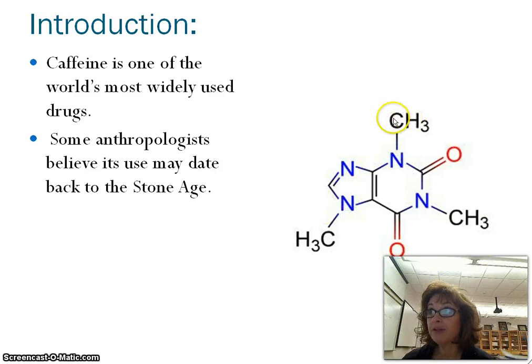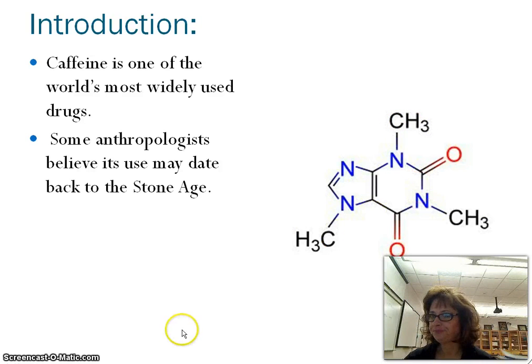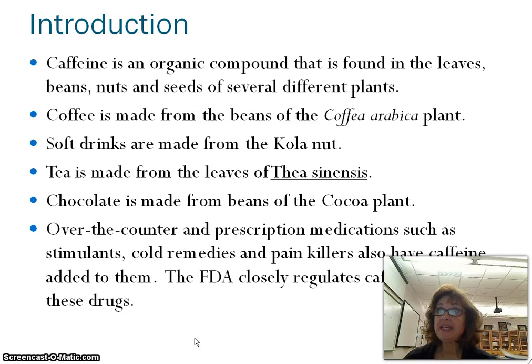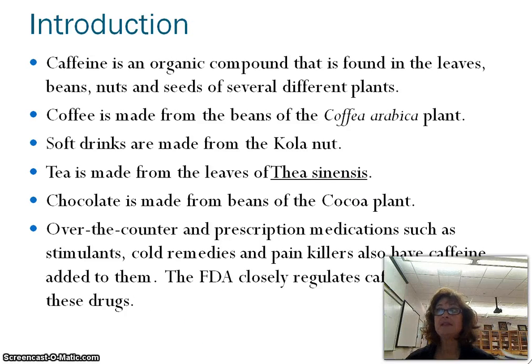It is an organic molecule. It's got your nitrogen in there and a ring structure. It's found in leaves, beans, nuts, and seeds of several different kinds of plants.